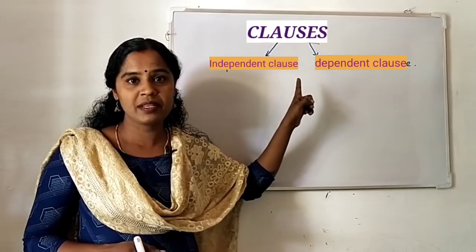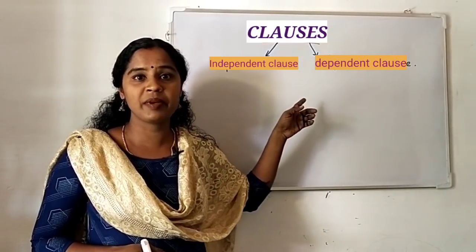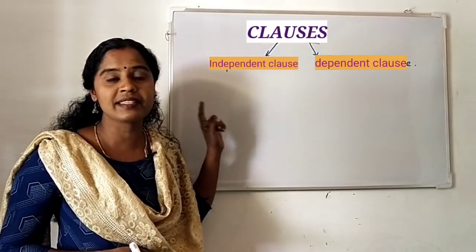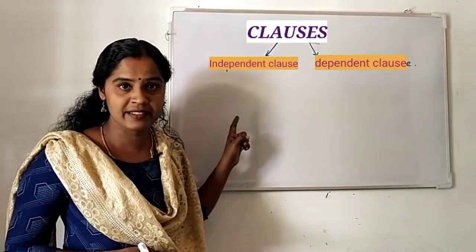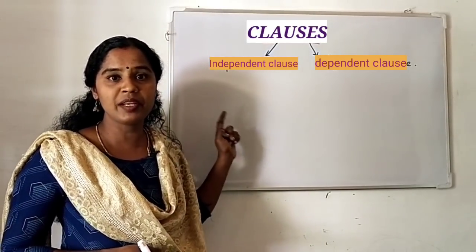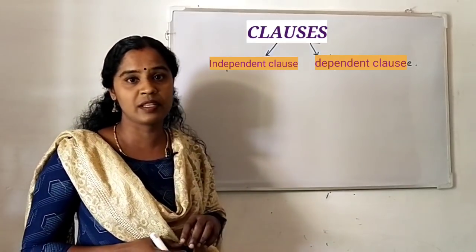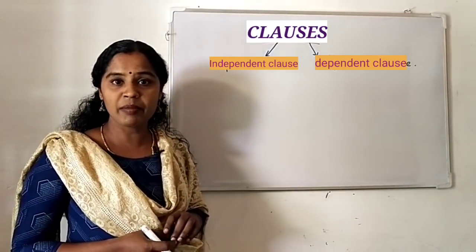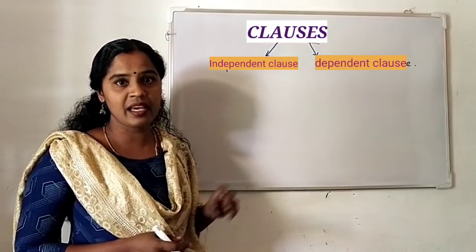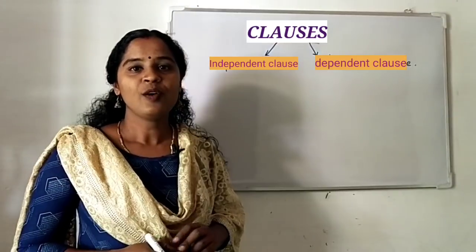Some clauses have complete meaning — just like a sentence. Clauses with complete meaning, with subject and predicate, we call independent clauses. They are independent clause.